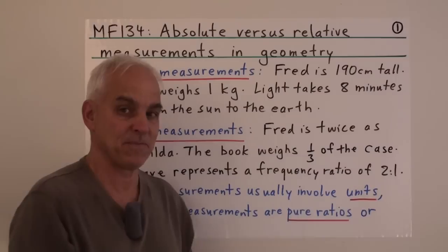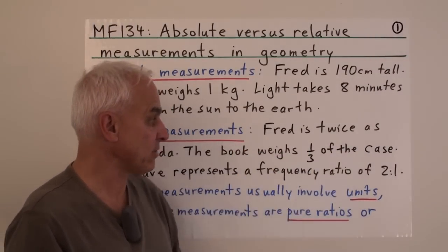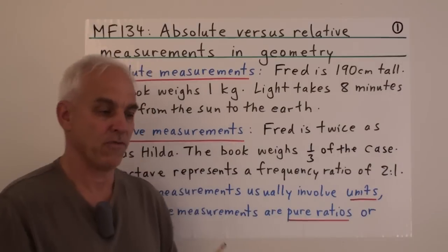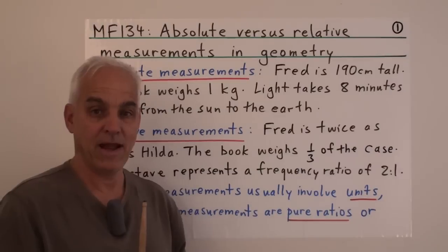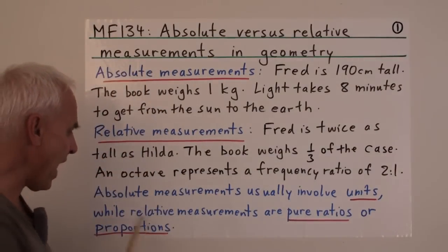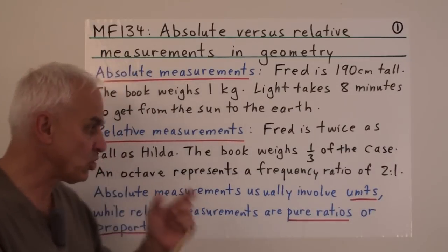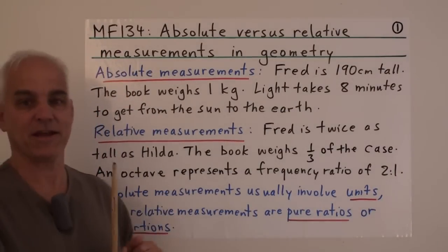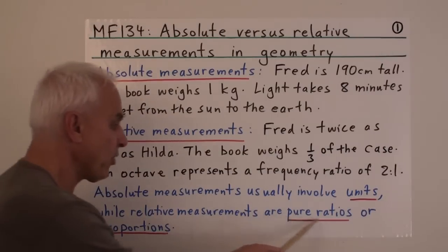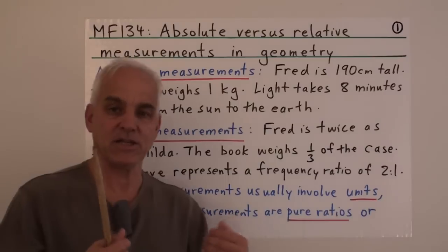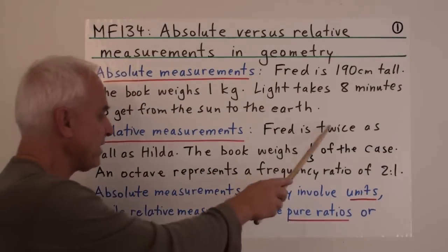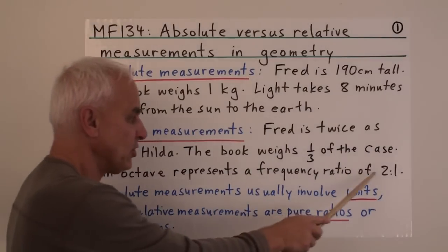Or the book weighs one-third of the case — this statement doesn't tell us how much the book and case weigh, it just tells us the relationship between the two. And an octave represents a frequency ratio of two to one — the Pythagoreans realized that's related to their ratio of two to one frequencies. Absolute measurements typically involve units, while relative measurements are generally pure ratios or proportions — unitless quantities, because the units cancel out. So twice, one-third, two to one — these are all unitless things.